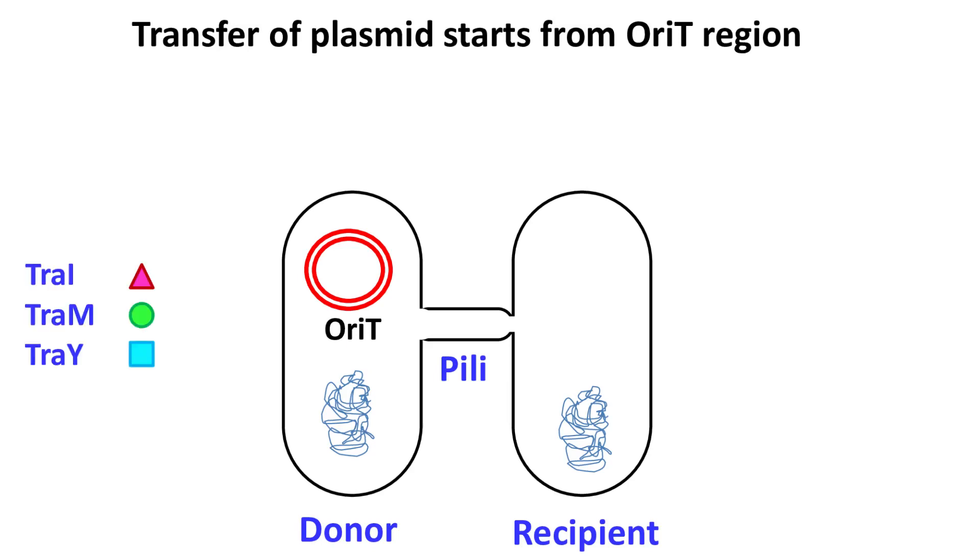During this process, the products of tra-genes known as TraI, TraM, and TraY play an important role.